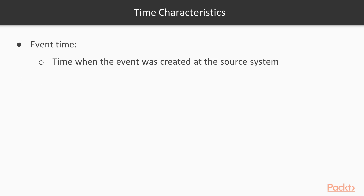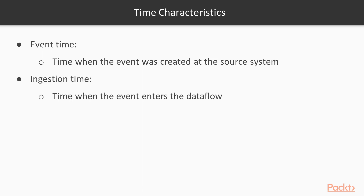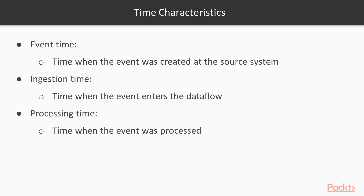Event time is when the event was actually created — for example, when a user really logged into your system. Ingestion time is when the event first entered your data flow. Processing time is when you finally got to processing it. These three become key ingredients in how you can manipulate the time-centric property of any event.